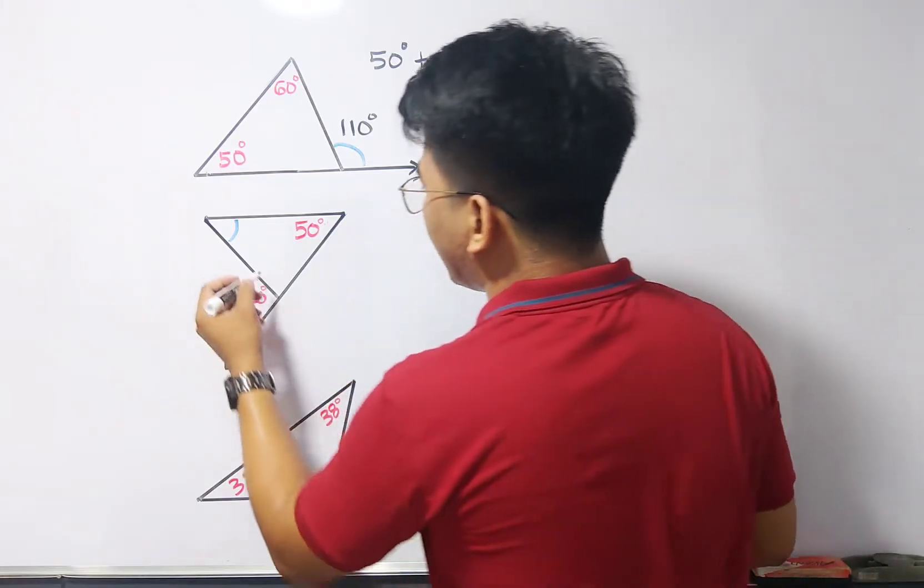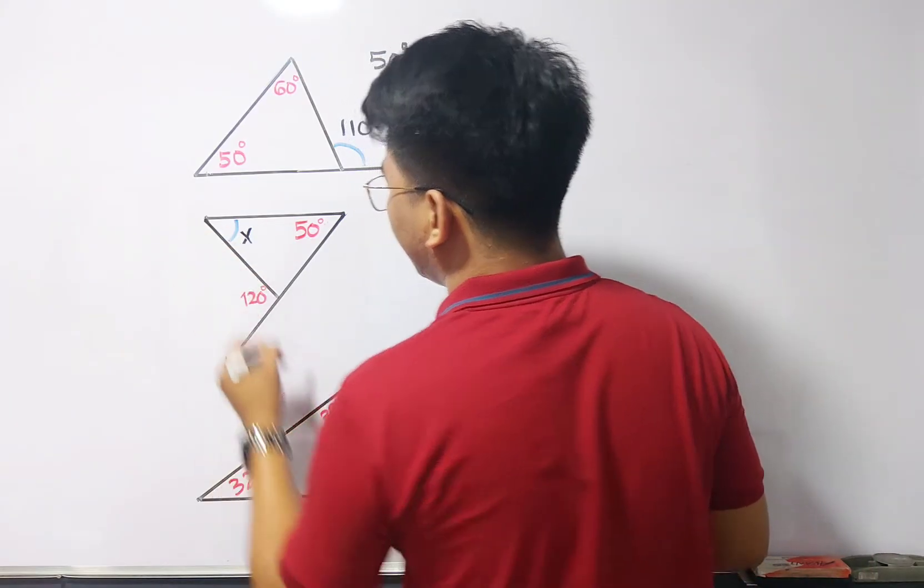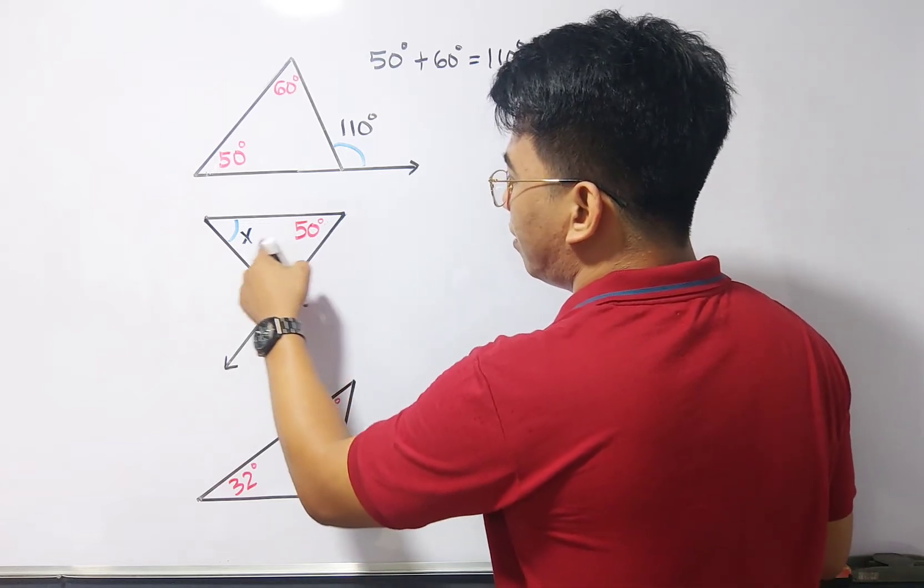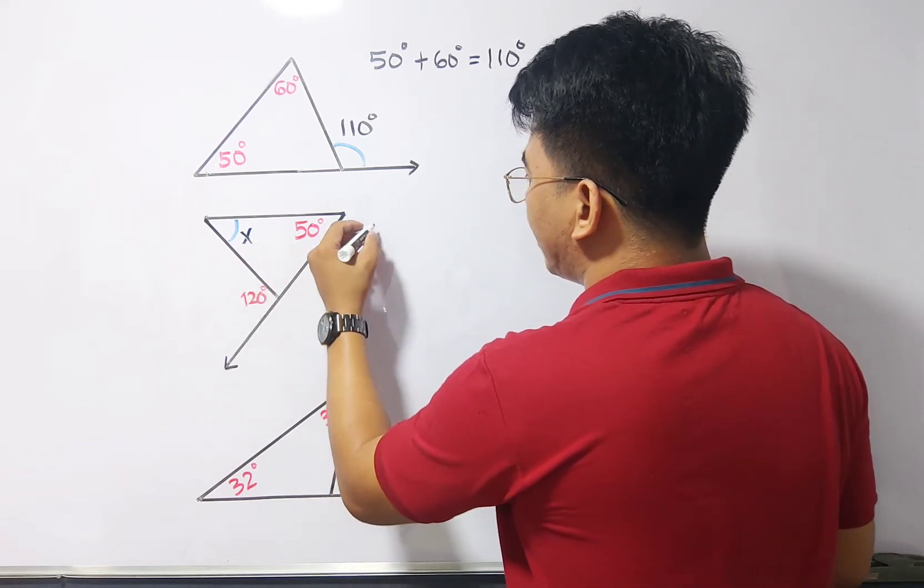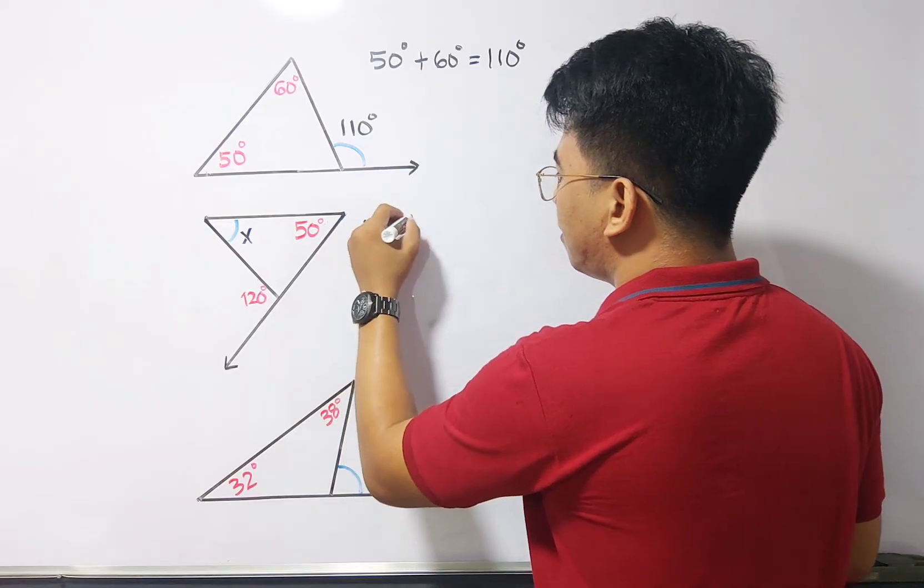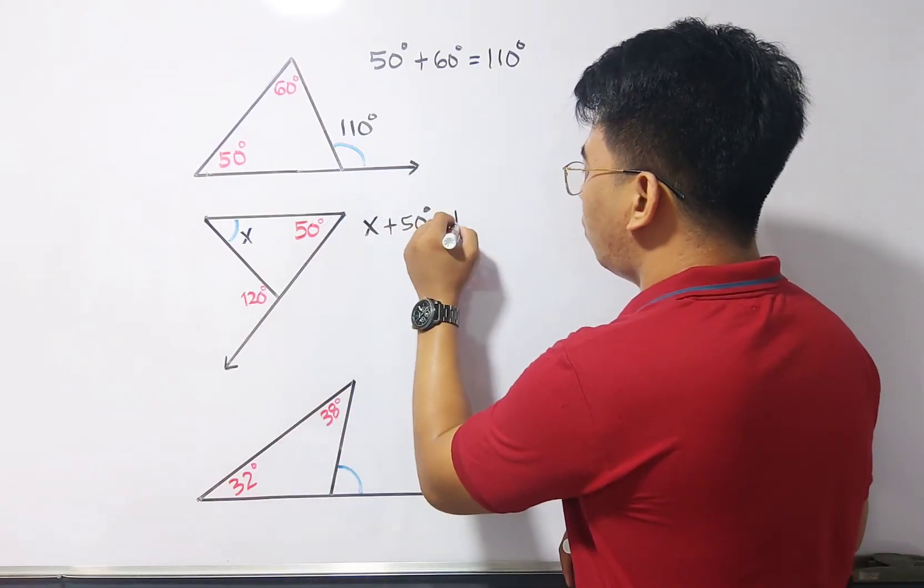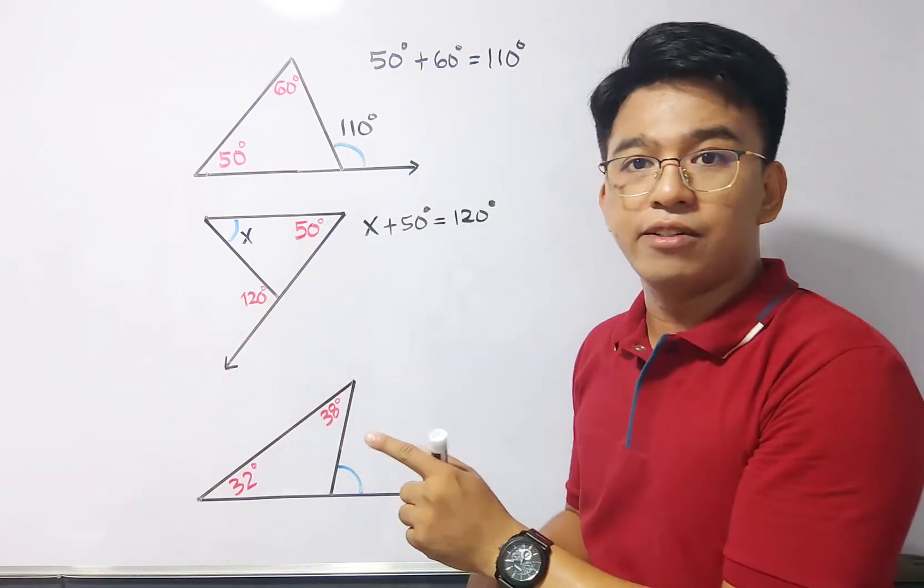So, let's try to represent this as x. So, to solve for that, add these two angles, and that is x plus 50 degrees is equal to 120 degrees, because this is your exterior.